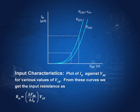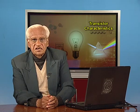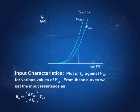From the input characteristics we get the input resistance. The input resistance is defined as delta VBE divided by delta IB — that is, a small change in VBE divided by a small change in IB. Suppose we take the curve for VCE1; if we have two points on it, then delta VBE divided by delta IB gives us the input resistance.